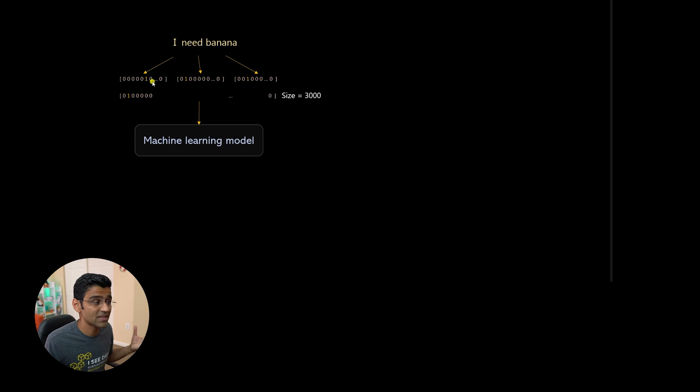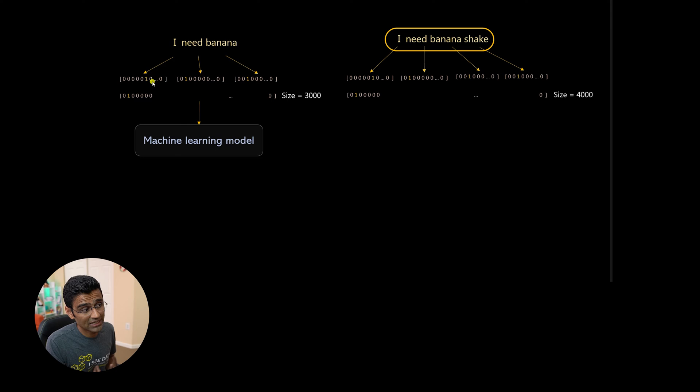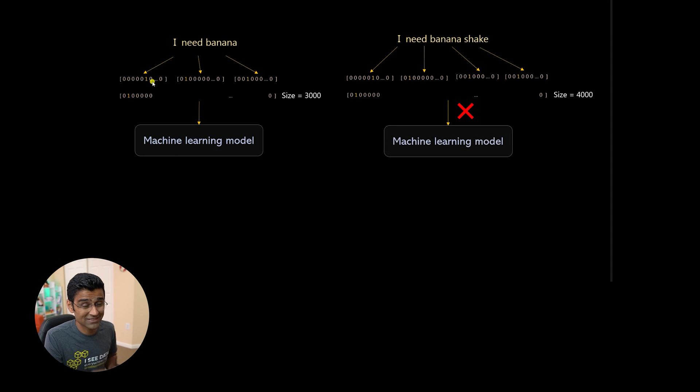But see, all my emails are not of the same size. So my next email could be I need banana shake. In that case, the size of the flattened vector would be 4000. And machine learning model expects similar size.